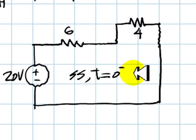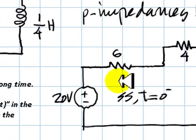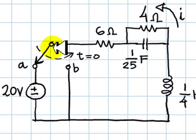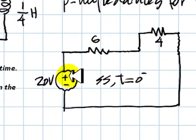This is a snapshot of the circuit for t right before zero, at zero minus. The switch is connected on A, so the source is present.